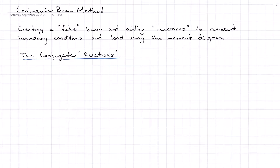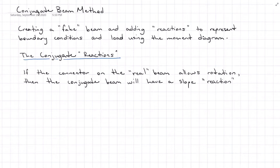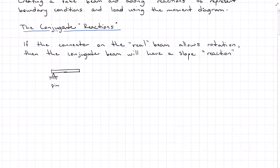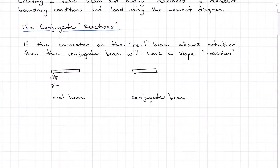So the conjugate beam reactions: if the connector on the real beam allows for rotation, then the conjugate beam is going to have a slope reaction. For example, a pin allows for rotation but prevents translation — that's why it has an X reaction and a Y reaction. So on the conjugate beam, we replace the pin with a slope reaction.